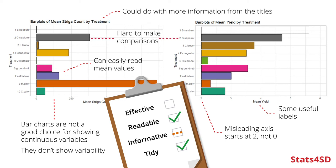Bar charts also make comparison more difficult because we can only see one variable at a time. Yes, we can start trying to pick out which bar refers to which treatment, but we have to put quite a bit of work in to pull out some of the messages. Bar charts are never usually the most effective way of presenting continuous variables. They can be more effective when dealing with percentages, which have no inherent variability — like 30% of farmers said X versus 60% said Y. That comparison is easier with a bar chart, but the comparison of averages not so much.